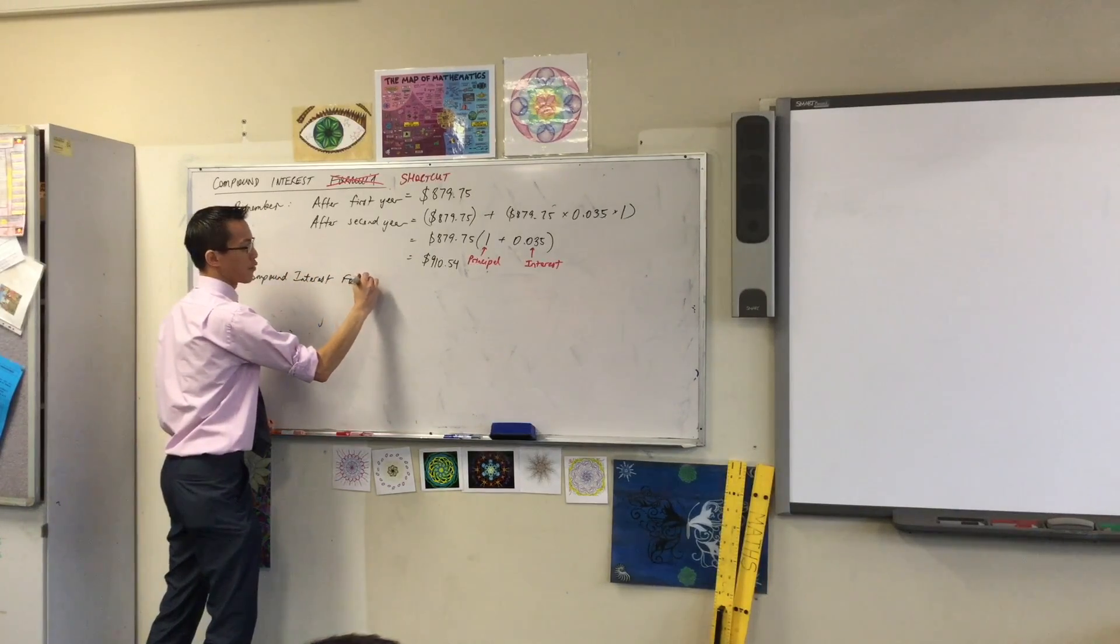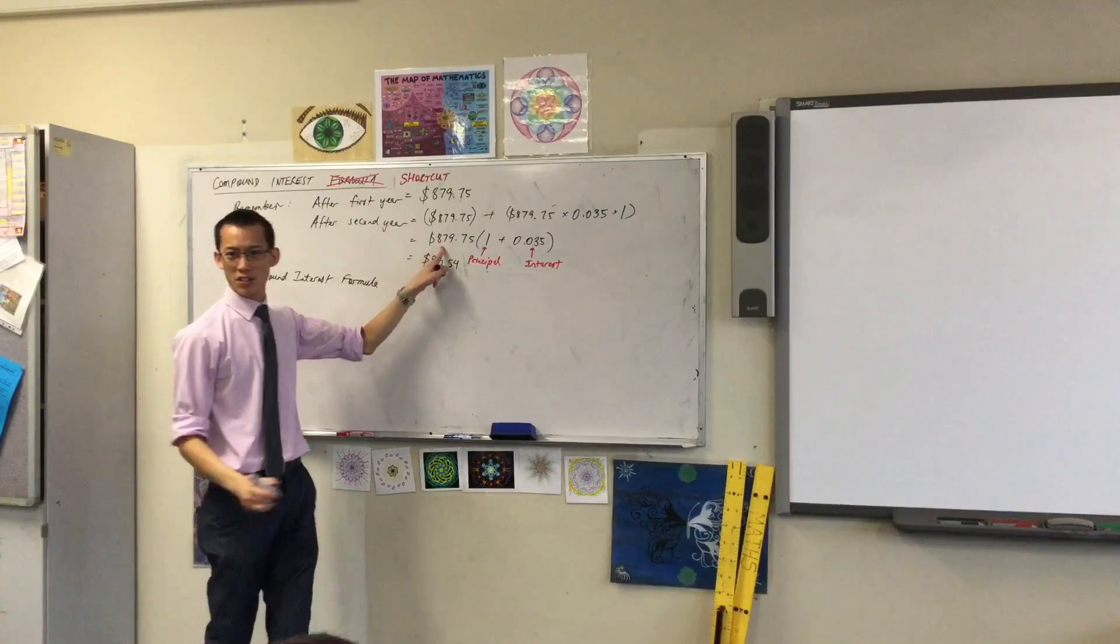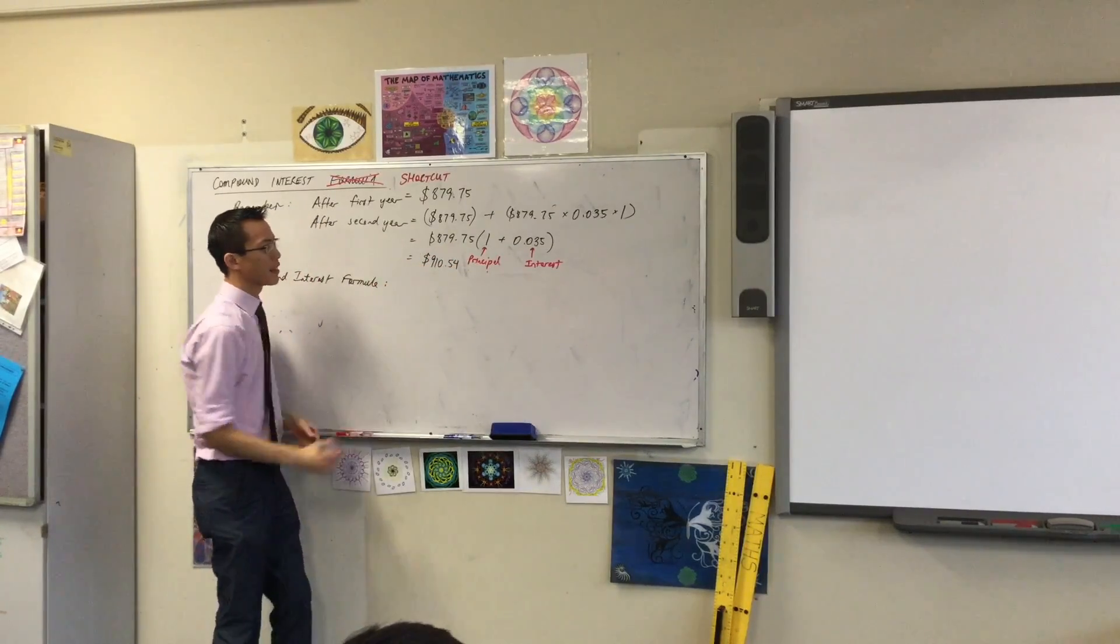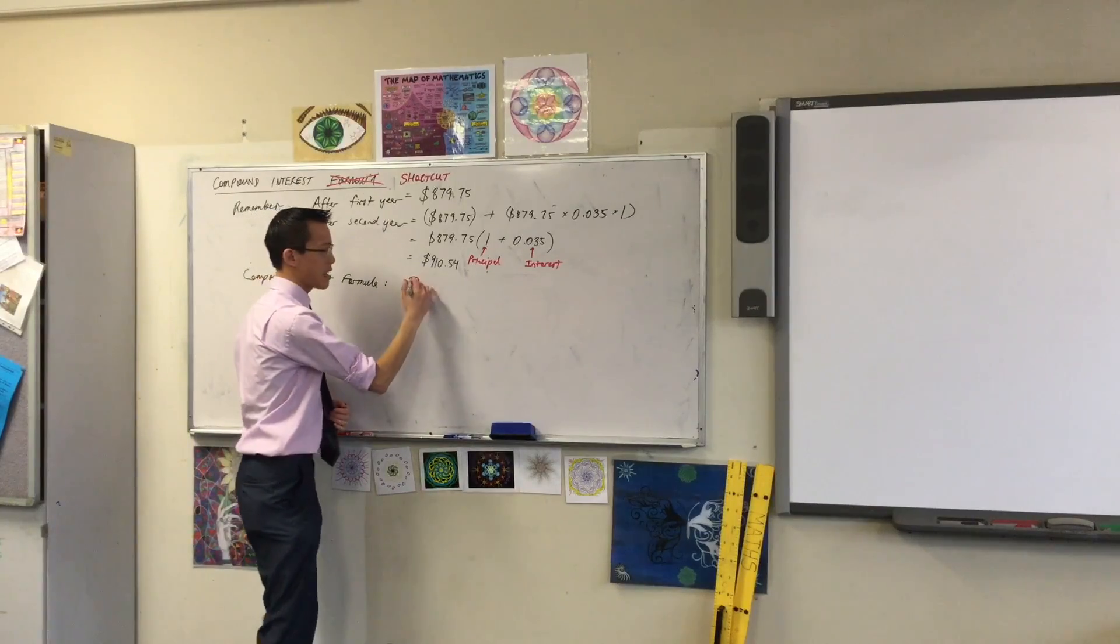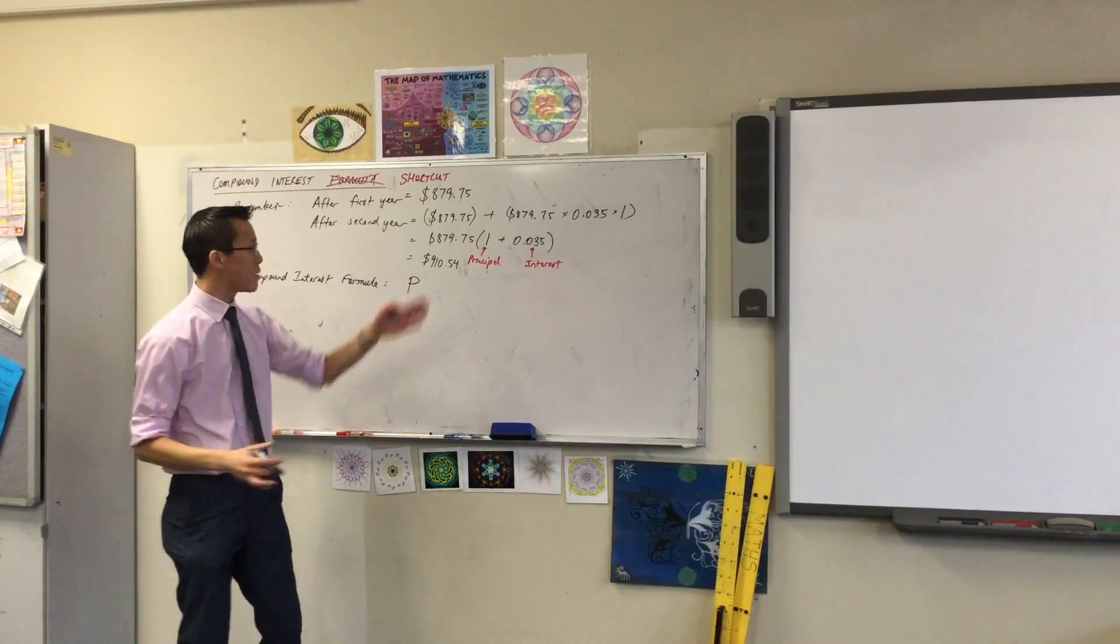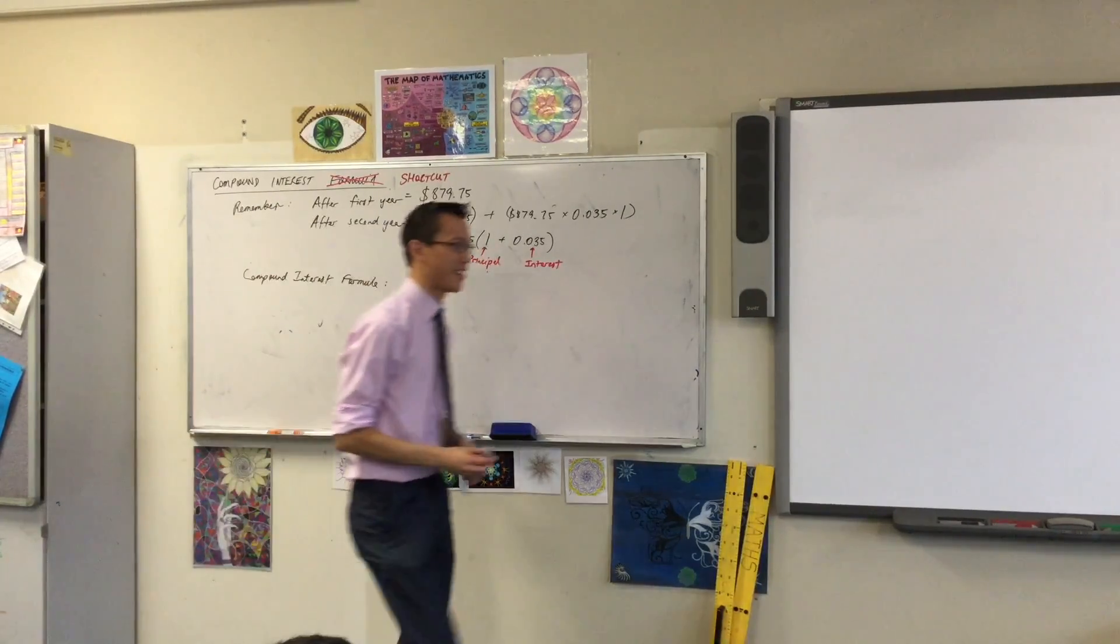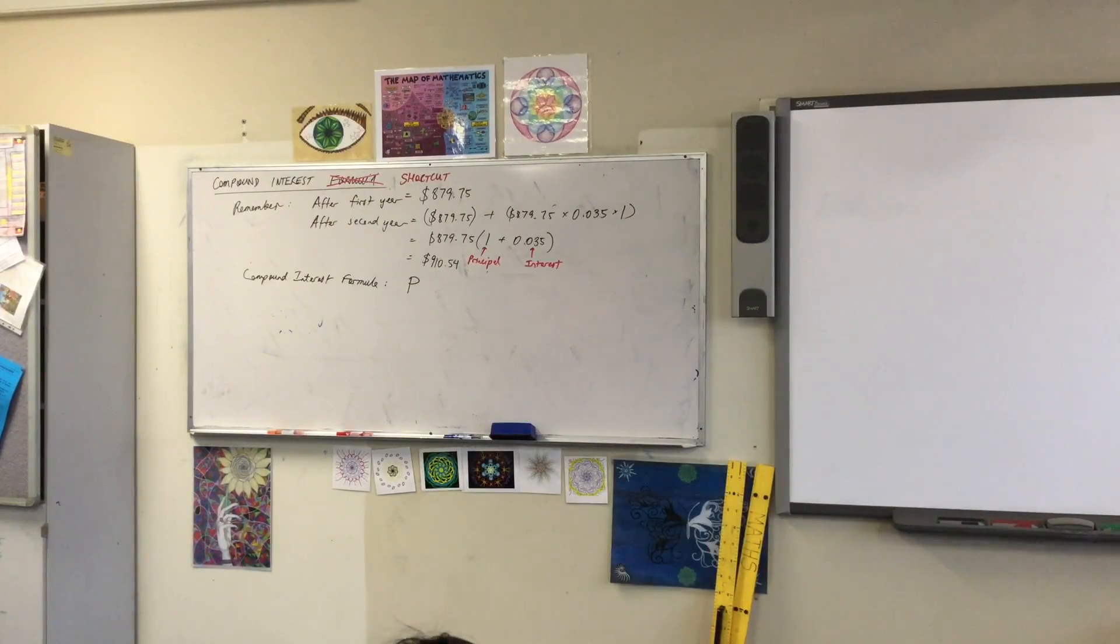This number at the front, the $879.75, it represents the principal. Do you agree? P for principal. That's the amount that you started with. These guys are so loud. Sorry.